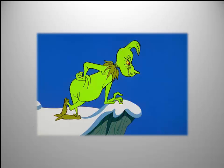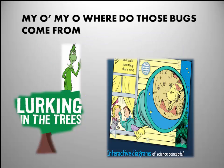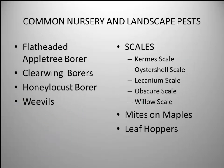This is the ponder point - what am I going to do to change this? Let it sink in. Now let's talk about 'oh my, where do those bugs come from?' Some of the most common landscape pests I see are: the flat-headed apple tree borer, the clearwing borer, the honey locust borer, weevils, scales, mites, and leafhoppers. We'll cover each one quickly.